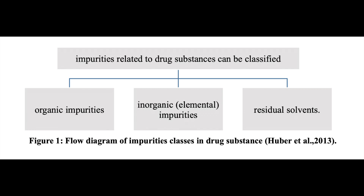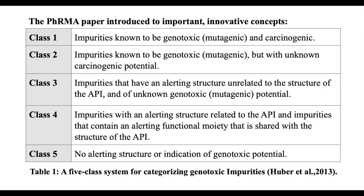According to ICH guidelines, impurities related to the drug substance can be classified into three main categories: one, organic impurity; two, inorganic impurity; three, residual solvent. There is also another classification according to the Pharmaceutical Research and Manufacturers of America paper.